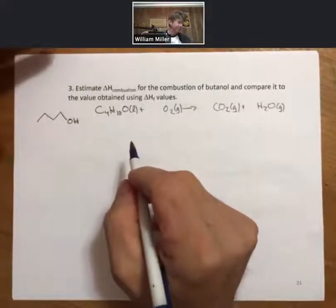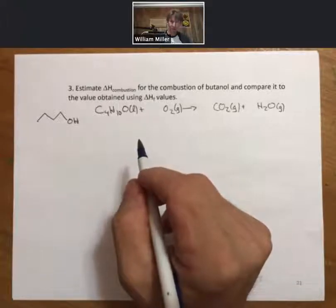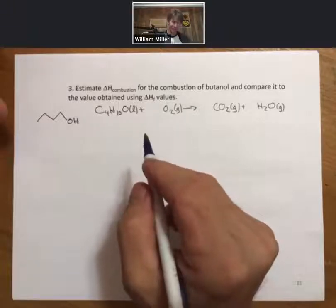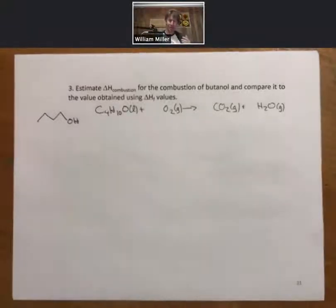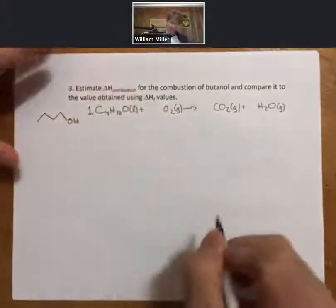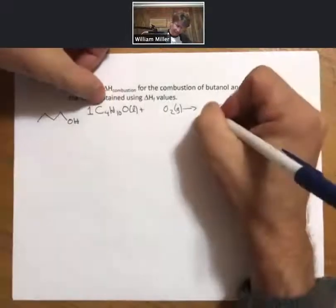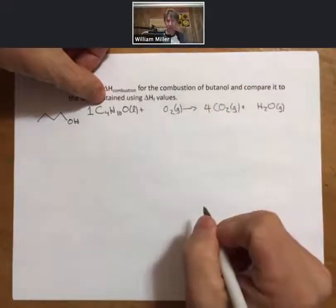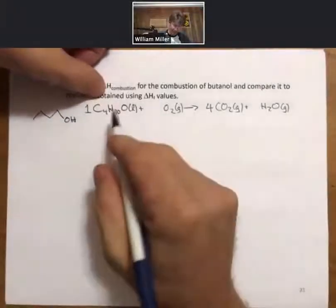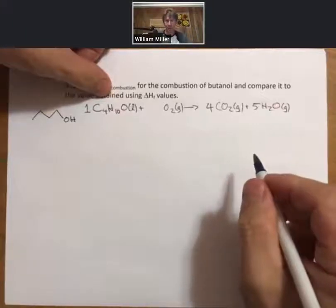Our process from the previous slide says: one, draw Lewis structures, and that's so we can see all of the bonds. Actually, before we do step one—I always forget this step—let's balance the reaction. Let's put a one in front of the butanol. Then that means there must be four carbon dioxides and five H2O gas or water vapors.